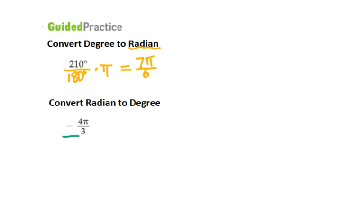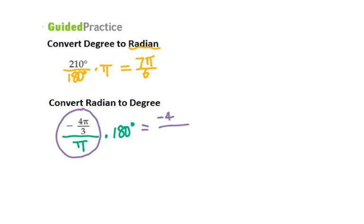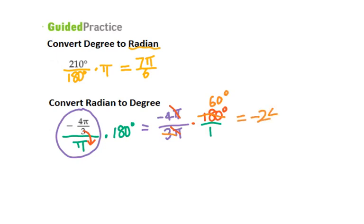Now convert radian to degree. First of all, you need to divide by pi then times 180. This will be a complex fraction. So I will get negative 4 pi over 3, divided by pi. We bring down the 3, then multiply by 180. Pi cancels out. Then we can reduce 3 into 180, that will be 60 degrees. So you get negative 240 degrees.